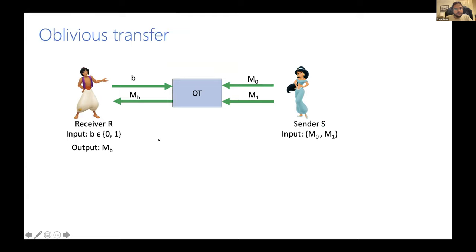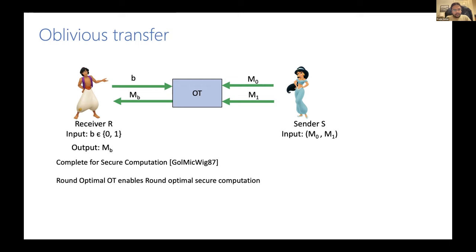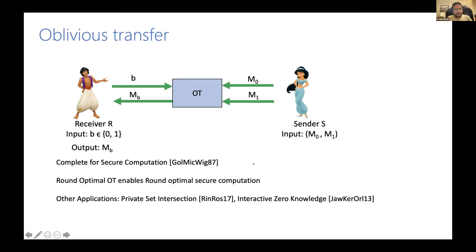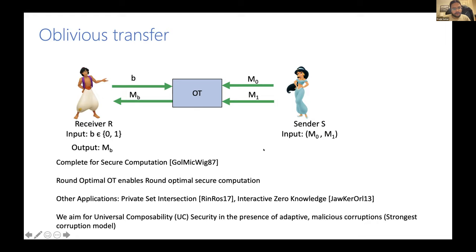Today we talk about OT — oblivious transfer — a very simple primitive. There's a receiver and sender. The receiver has input B, the sender has inputs M0 and M1, and the receiver obtains M_B as output. The receiver should not know M_{1-B} and the sender should not know B. This primitive of OT is complete for secure computation. Round-optimal OT enables round-optimal secure computation. It also has applications like private set intersection and interactive zero-knowledge. In this work, we aim for constructing adaptively secure OTs, which are secured against malicious corruption of parties. We aim to achieve UC security — the strongest corruption model and the strongest security model in MPC.